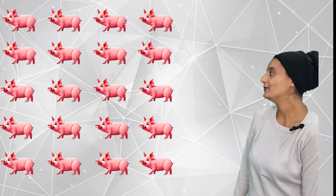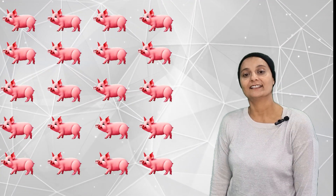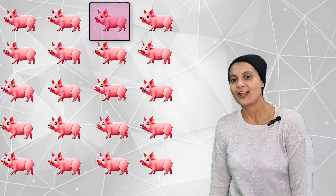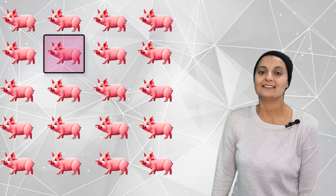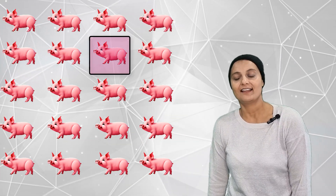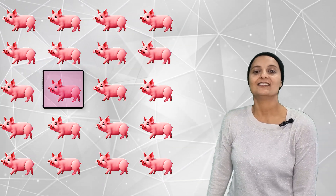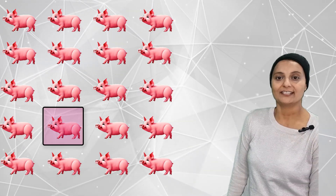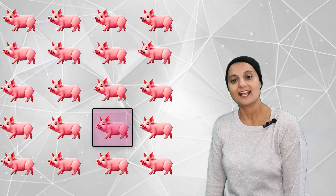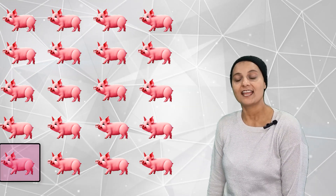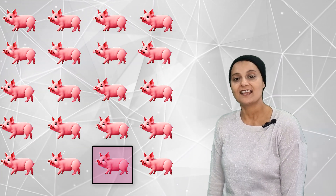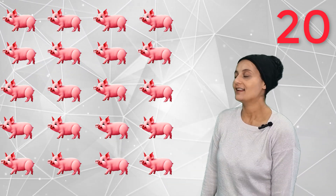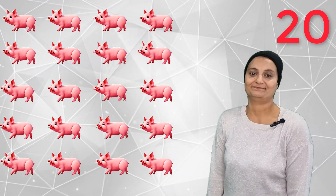How many playful piglets are there? There are one, two, three, four, five, six, seven, eight, nine, ten, eleven, twelve, thirteen, fourteen, fifteen, sixteen, seventeen, eighteen, nineteen, twenty. Twenty playful piglets! Oink, oink, oink, oink, oink.